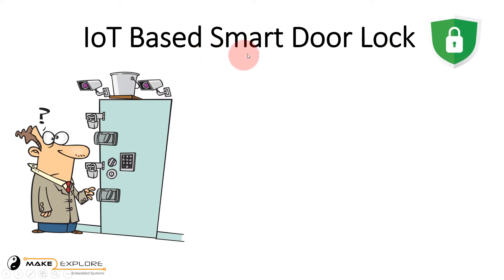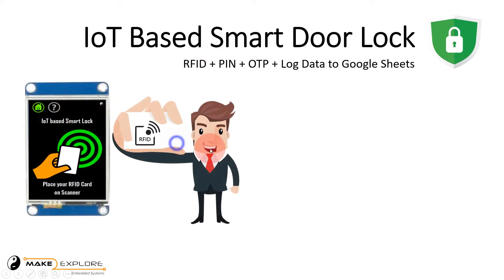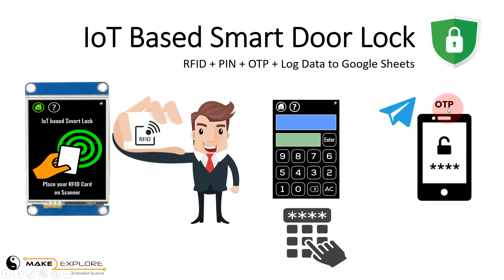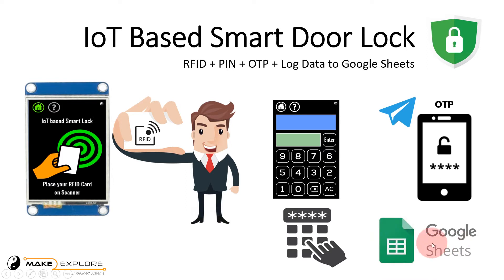In this project we're going to build a door lock which will have three layers of security. If a user wants to unlock this door lock, then he or she should have to enter a valid RFID, PIN, and OTP — means one-time password. We will also program this door lock system to keep a record of data about each user entry with names of users and timestamp. This data will be recorded on Google Sheet, so the system administrator can keep track of how many times this door lock was opened.